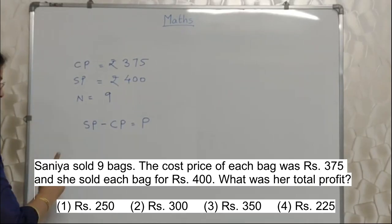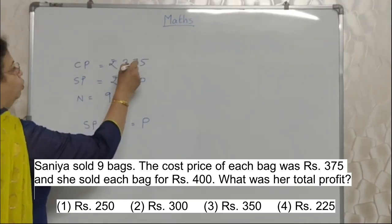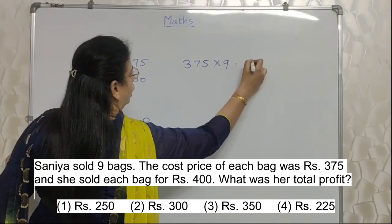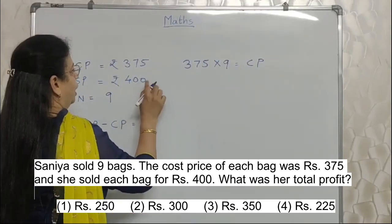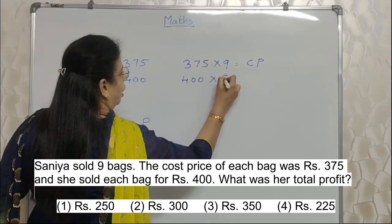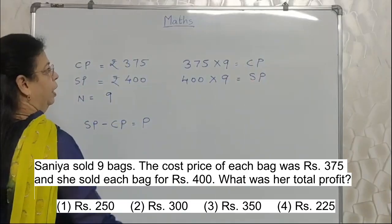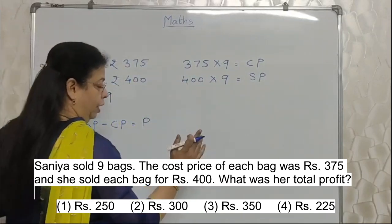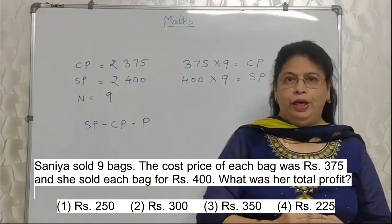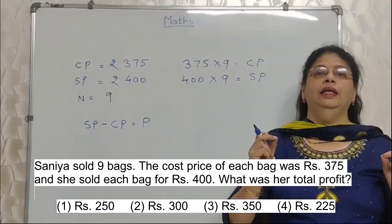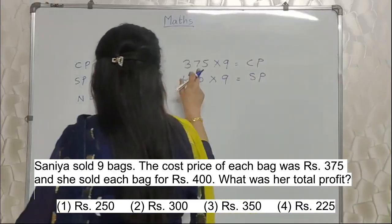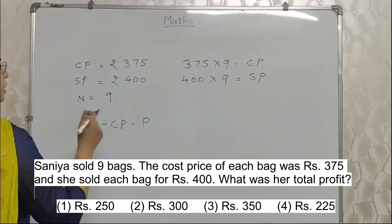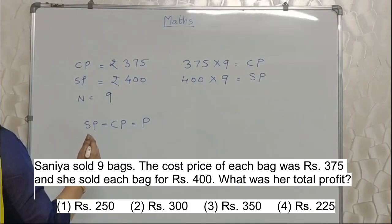I have seen students doing 9 bags into 375, which will give them - see what they do: 375 into 9, this will be total CP. So 400 is the selling price, so 400, how many bags? 9. So this will give total SP. Then after doing this multiplication, if we do subtraction using this formula, we will get profit. There is nothing wrong in this. Absolutely correct. What is the important thing? Time. How much time we will waste doing this multiplication, and again this multiplication, and then subtraction? If we get an easier way to do this, it will be very good. Right?